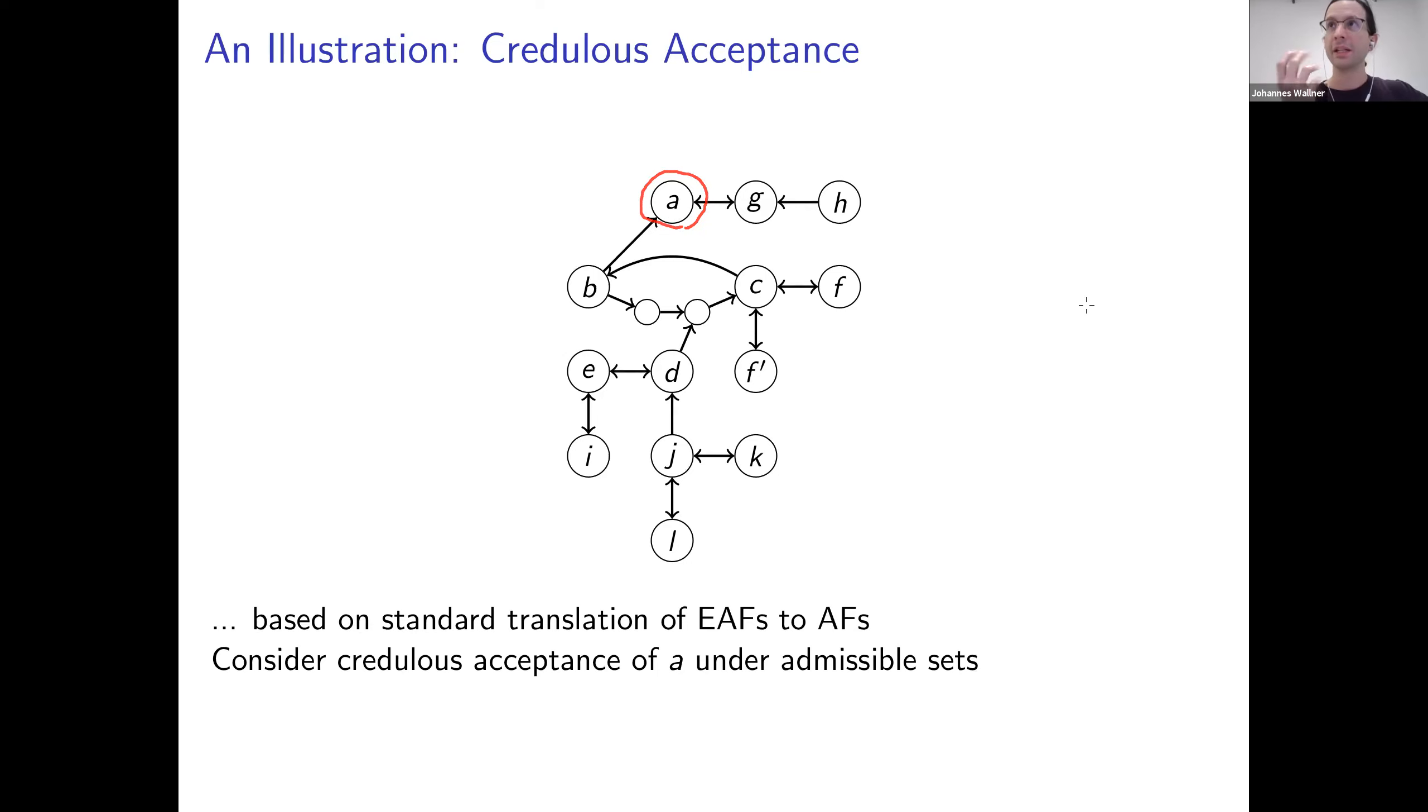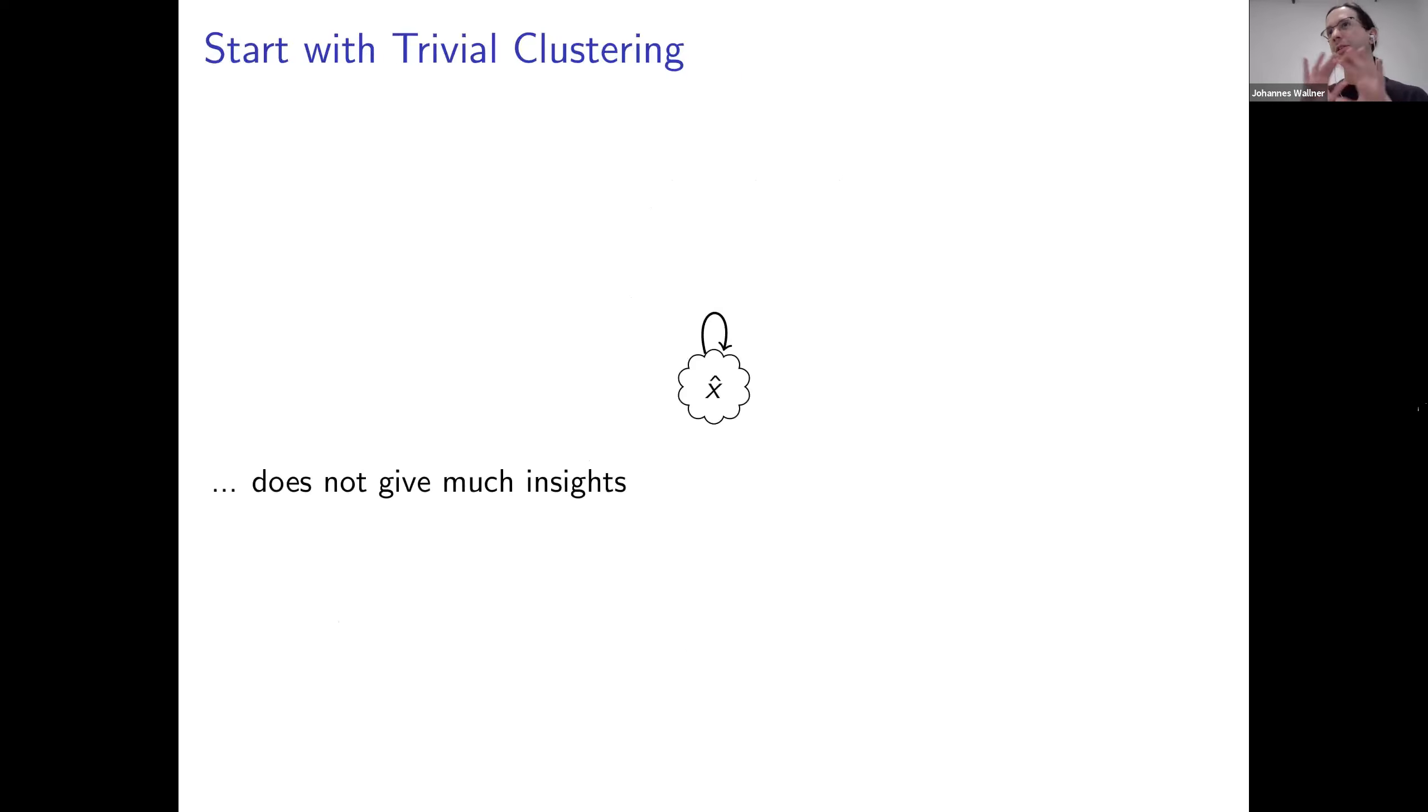The approach how we utilize the abstraction is that we first start with an initial coarse abstraction, actually this one here, which of course doesn't give any information, but this is just a starting point. The starting point is to cluster everything into one clustered argument. You see, of course, we don't see much here. Actually, I forgot to mention the self-attack here comes from because there is some attack happening inside. That's why the clustered argument attacks itself.